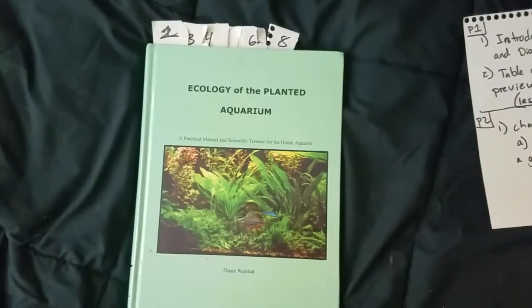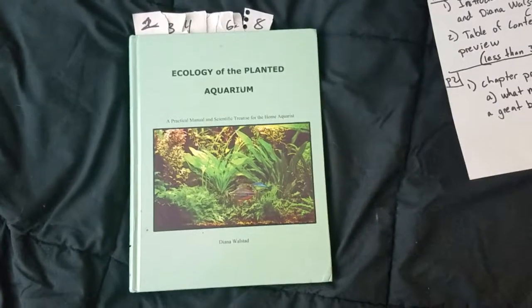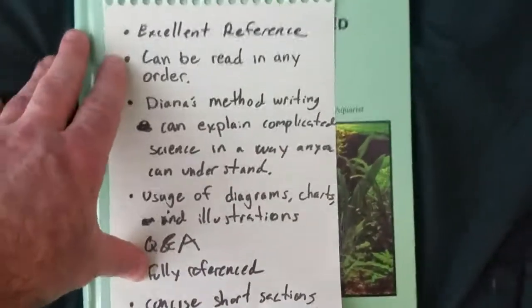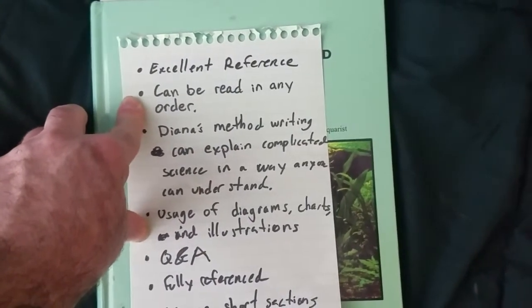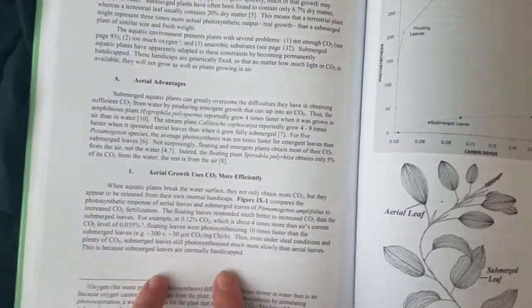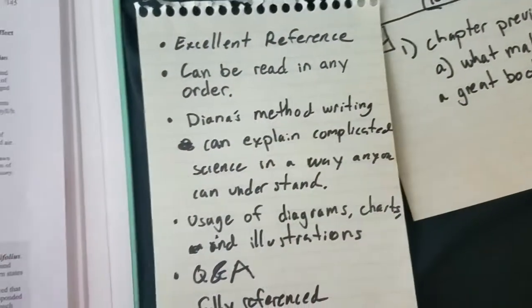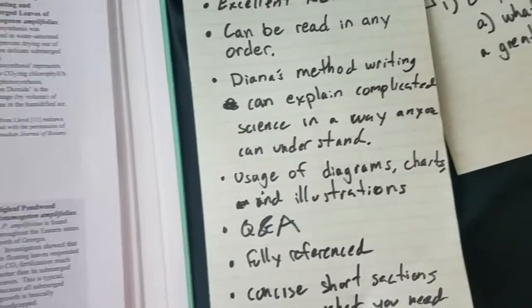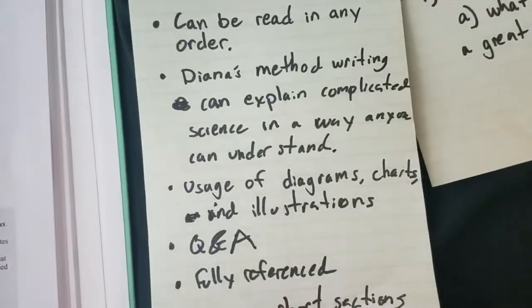I'm actually going to make part two a separate video, because six minutes is longer than I thought. Definitely didn't hit that three-minute goal. But if you want a preview of the chapters and what makes this book great — it's an excellent reference. You don't have to read it in any order; you can pick a chapter and read it. It's very concise, with brief sections that are easy to read. Diana's method of writing explains complicated science in a way that anyone can understand, without any scientific or ecological background.